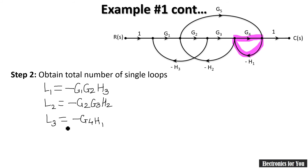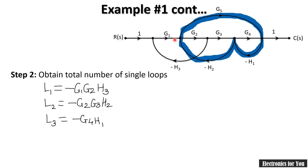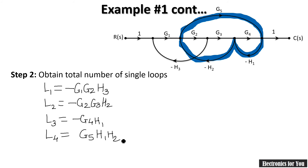The fourth single loop L4 passes through G5, -H1, and -H2. Both signs are negative, so they cancel to give a positive product: L4 = G5·H1·H2. These are our four individual loops.